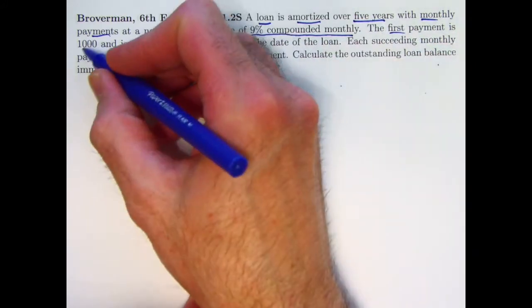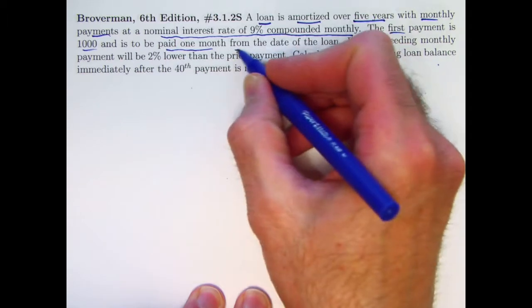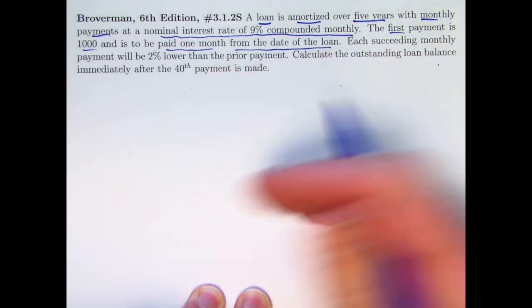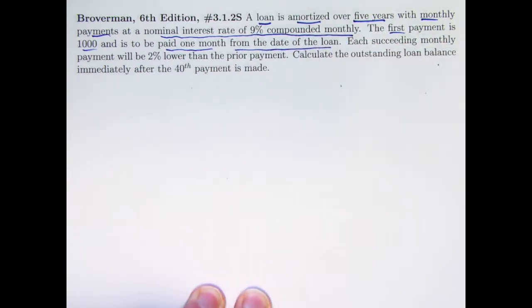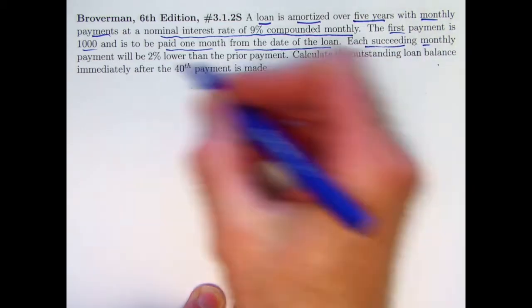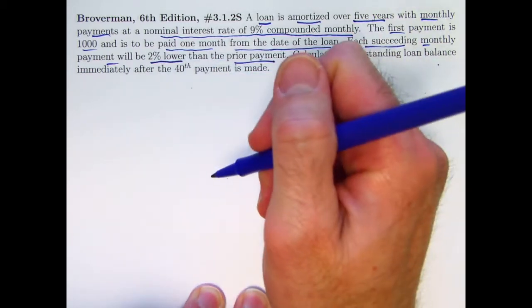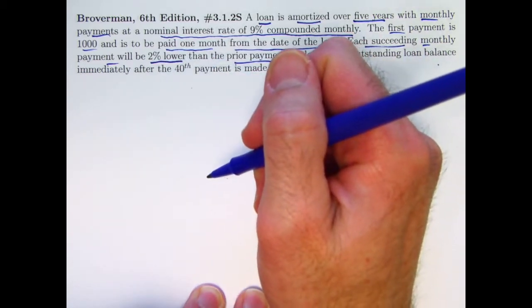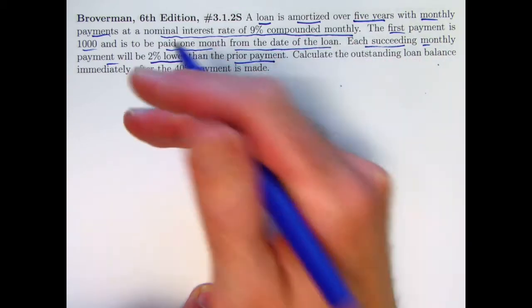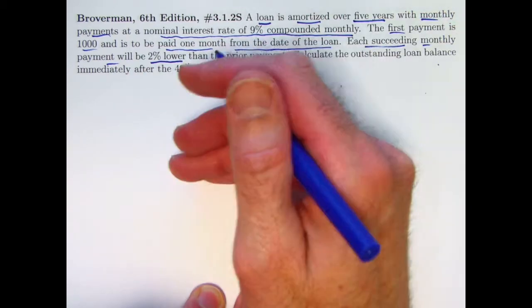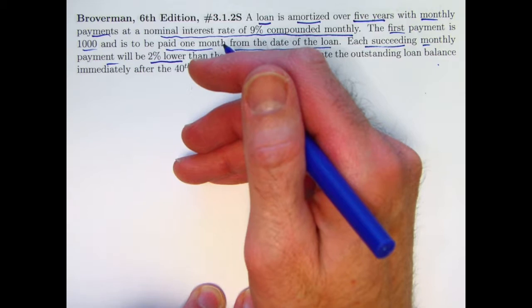The first payment is $1,000 and is to be paid one month from the date of the loan. In other words, the amounts that you pay back over time form an annuity immediate. Each succeeding monthly payment will be 2% lower than the prior payment. So that's what makes it a geometrically decreasing sequence of payments. They're not level. You keep multiplying the preceding payment by 0.98 to get the next payment.